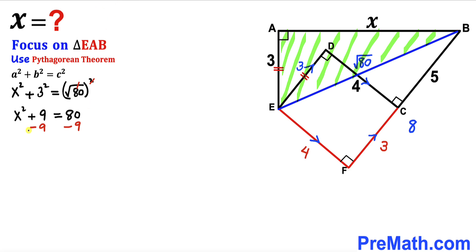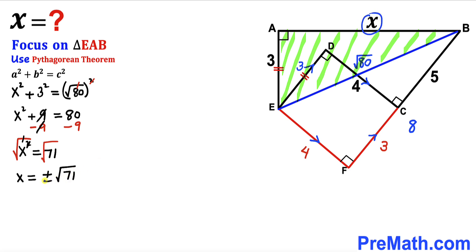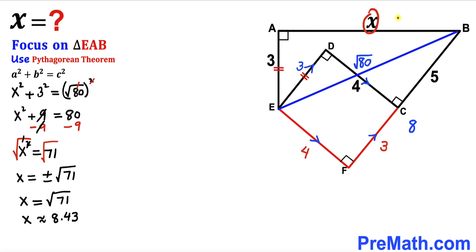Subtracting 9 from both sides, x² = 71. Taking the square root of both sides, x = ±√71. Since x represents a side length, the negative value is not feasible, so our only valid value is x = √71, which is approximately equal to 8.43 units.